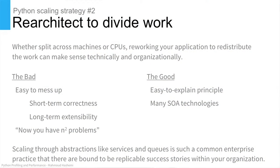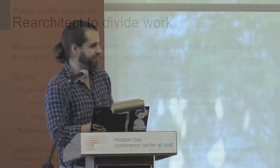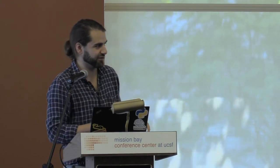Number two: you re-architect to divide work. This is where a lot of enterprise software gets stuck. You start factoring things into services and microservices and figuring out how to have things scale in different ways on different machines. It's easy to get mired in — easy to mess up. You sacrifice short-term correctness and long-term extensibility, and you can generate n-squared problems when you start factoring things out. But the good is that a lot of people are getting comfortable with it, and there are many SOA technologies to guide you.